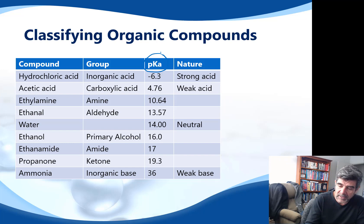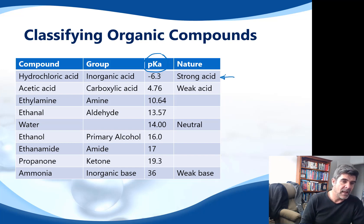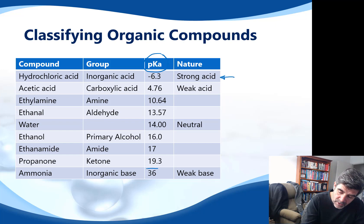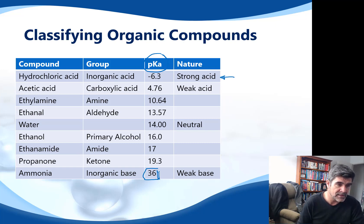The pKa value for a very strong acid such as hydrochloric acid is actually a negative value, telling us its very strong acidic nature. Something like ammonia, which we know is a weak base, has a very high pKa. It acts as a base, but it's a weak base — not a strong base such as sodium hydroxide. Once we start to talk about substances in terms of their basic nature, we're probably not going to measure them in terms of their pKa, because this relates to the acid equilibrium constant or acid ionization constant.